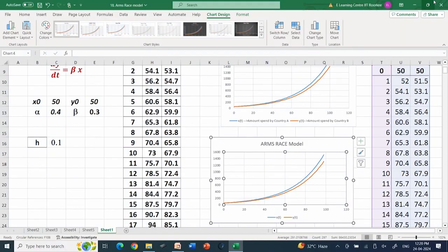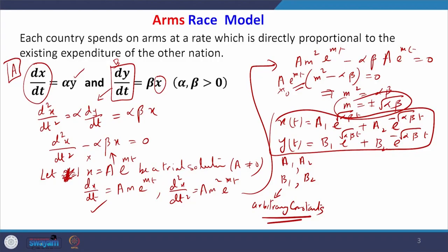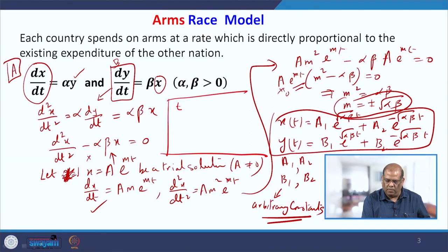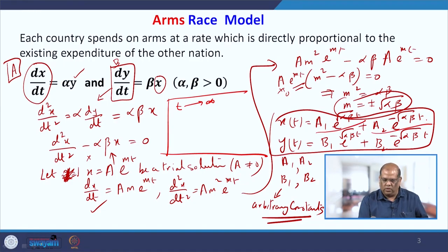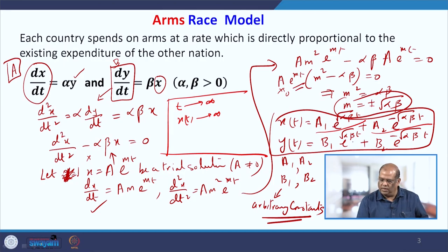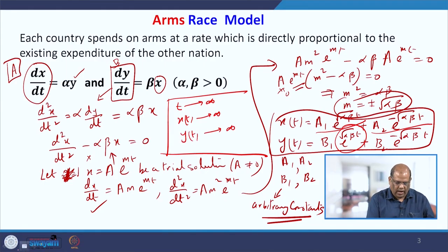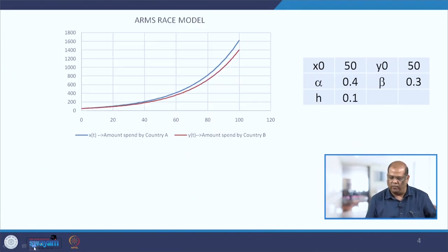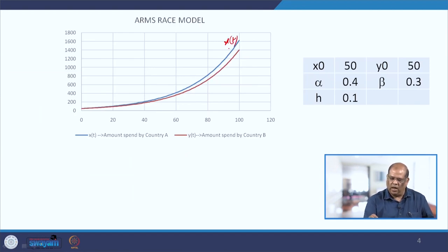Looking at this solution, as t becomes large, the exponential term e^(√(αβ)·t) goes to infinity, so both X(t) and Y(t) go to infinity. This is exactly what is reflected in the numerical solution we have just done — xt and yt both increase exponentially.